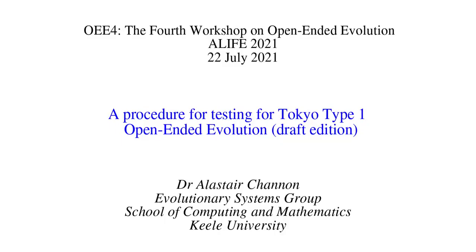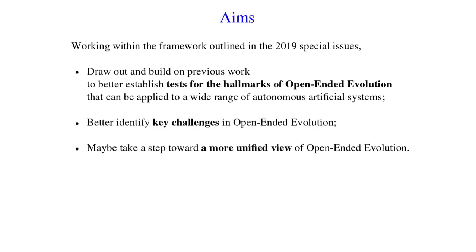This talk is about how to test for Open Ended Evolution. More specifically, it presents a procedure for testing for Tokyo Type 1 Open Ended Evolution, Draft Edition. My initial aim for this work was to better establish tests for Open Ended Evolution by drawing out and building on previous work. In the process of doing that, I realised it helped to better identify key challenges in Open Ended Evolution, and maybe to take a step towards a more unified view.